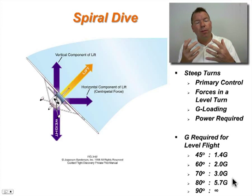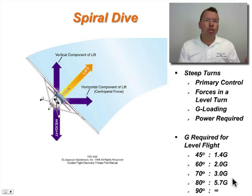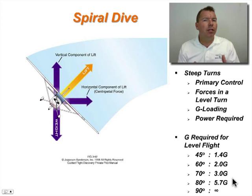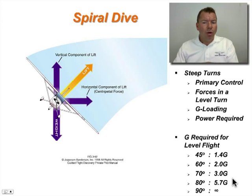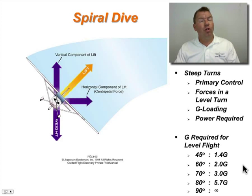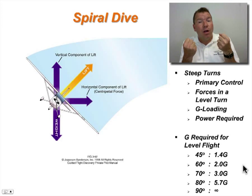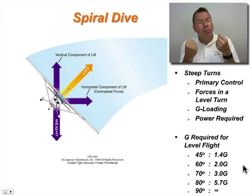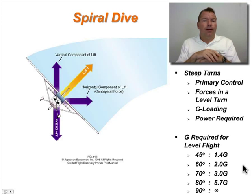Think about maneuvering while in the pattern when you're slow — you don't even have those G's available to you, not even close. It wouldn't take much bank angle for you to be nose-low, wanting to pull away from the ground while slow, and you could easily pull the airplane into an accelerated stall as you began to pull.